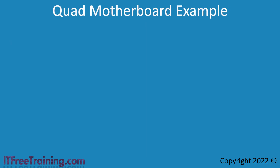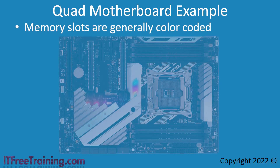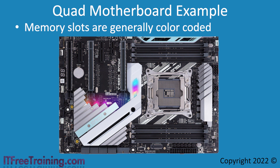When installing memory modules, you need to ensure that the memory modules are put in the correct slots. In most motherboards nowadays, the slots are color coded to make it easier — for example, on this motherboard, the slots are colored gray and black. Ensure you check the documentation supplied with the motherboard. Often, a motherboard requires a single memory module installed in a particular slot before it will even start up. In this case, the first module goes in the first gray slot below the CPU; for dual channel, the next module in the lowest gray slot; for triple channel, in the gray slot above the CPU; and for quad channel, in the second gray slot above the CPU.